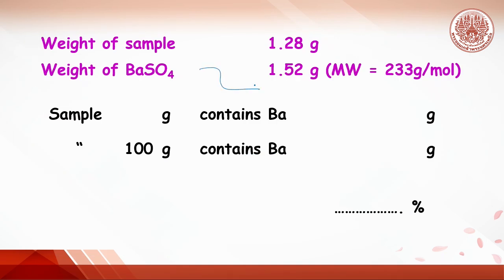Right now, we have barium 0.89 g from the sample. So, we can write down, sample of 1.28 g contains barium 0.89 g. We extrapolate to 100 g. We get 0.89 times 100 divided by 1.28, and we will get the percentage of barium in the sample.